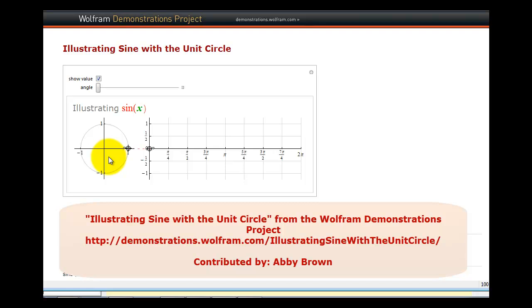If an angle is in standard position, the point where the terminal side of the angle intersects the unit circle will give us both the cosine function value and the sine function value, where the x-coordinate is the cosine function value and the y-coordinate is the sine function value.